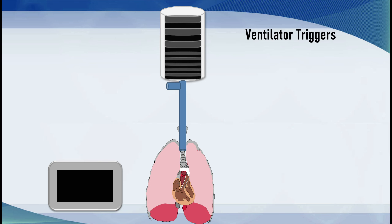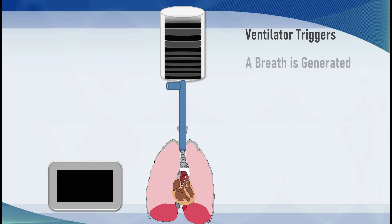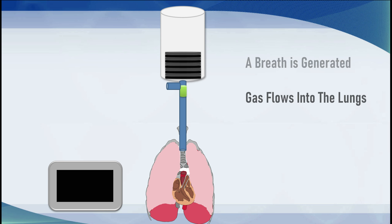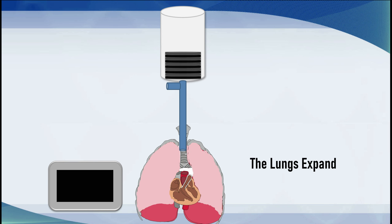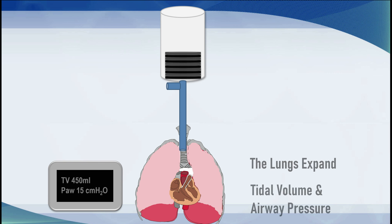The ventilator triggers — and we'll talk in an entire tutorial about how ventilators trigger — and a breath is generated. That may be a volume control breath, a pressure control breath, or a completely unsupported breath. Gas flows into the lungs and that flow is always positive, so there's a flow waveform that can be generated. The lungs then expand and the tidal volume and airway pressure are measured. In this case, the tidal volume is 450 mils and the airway pressure is 15 centimetres of water.